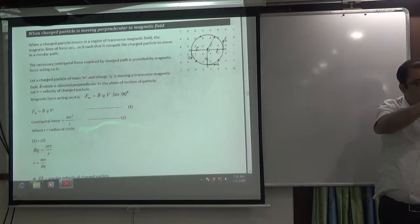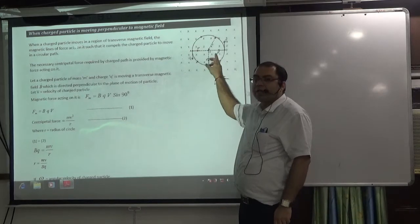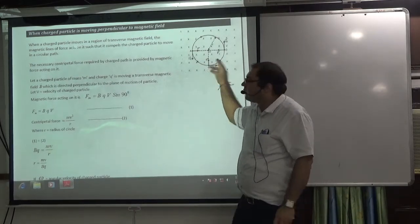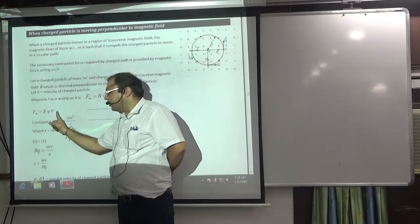Now this was done, so this proof is clear. Because where will the force always go? Towards the center of the particle. How much will it be? Bqv sin 90, what will it be? 1. So Bqv.